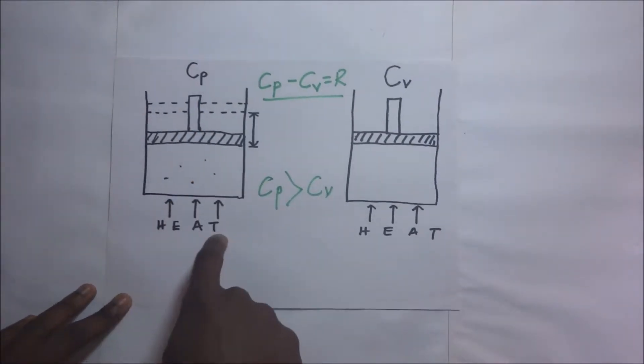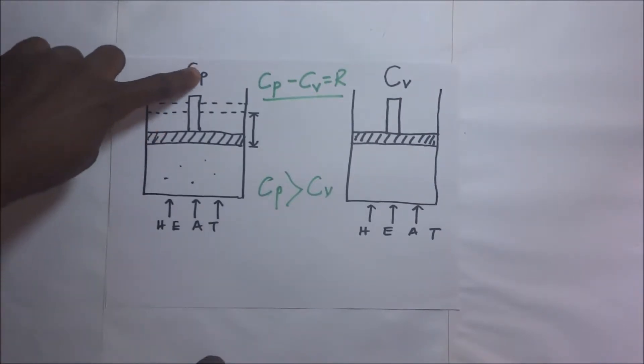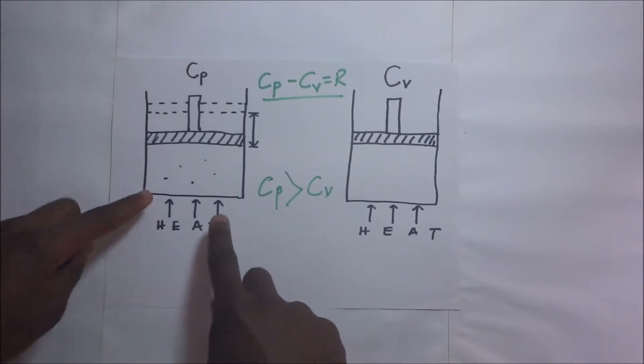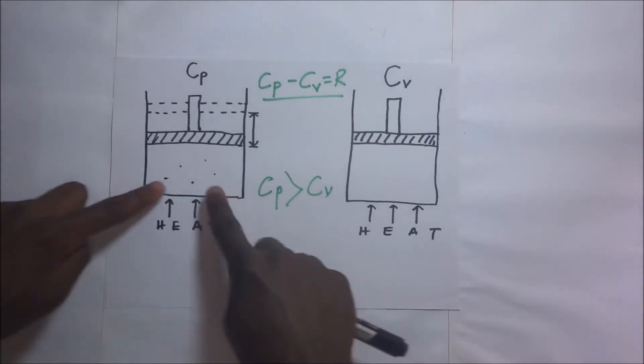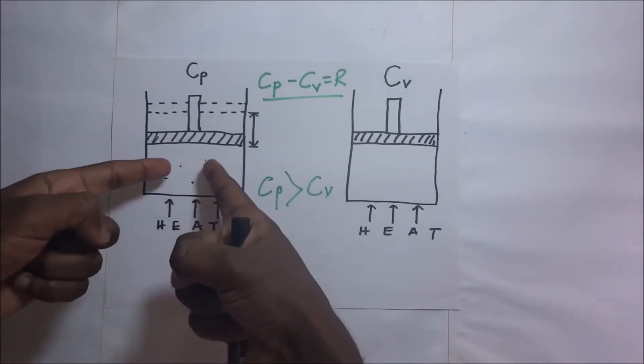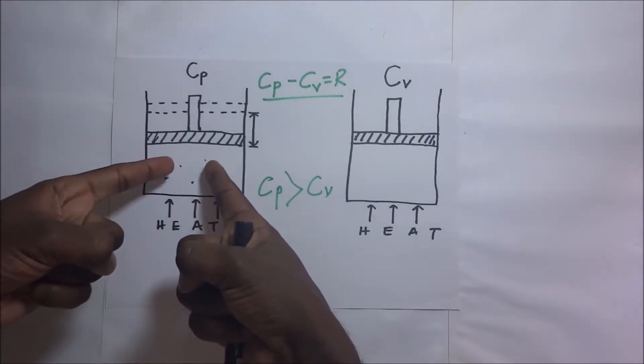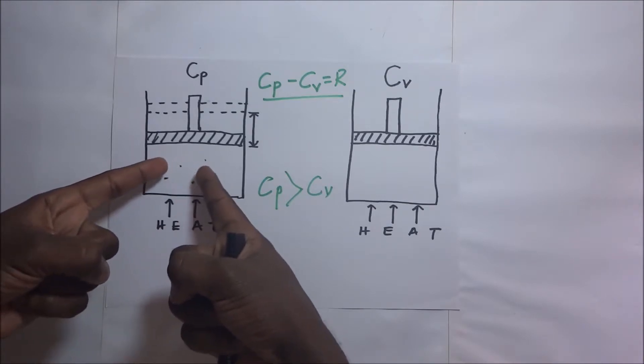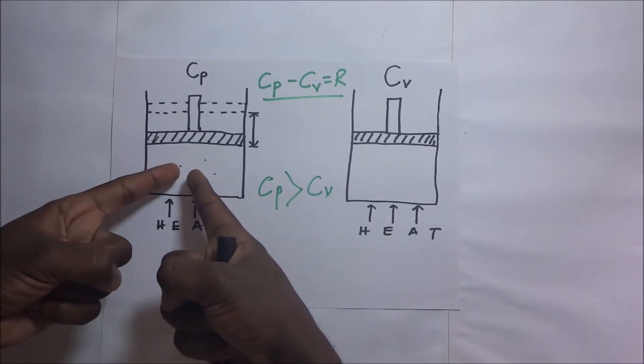Now it means that the specific heat capacity at constant pressure requires that as heat is coming in, this heat coming in is first of all, increasing the internal energy of this gas.